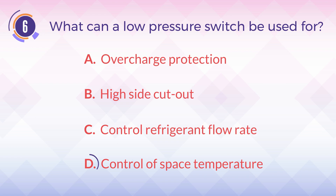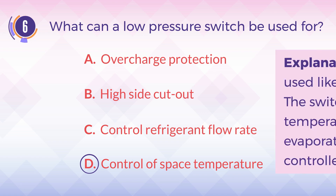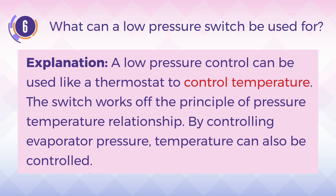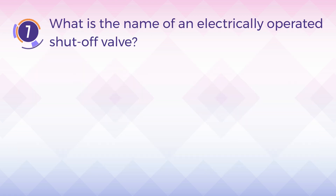The answer is D, control of space temperature. A low pressure control can be used like a thermostat to control temperature. The switch works off the principle of the pressure-temperature relationship; by controlling evaporator pressure, temperature can also be controlled.